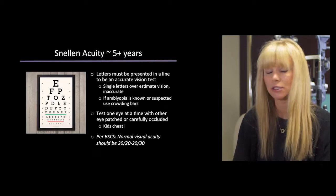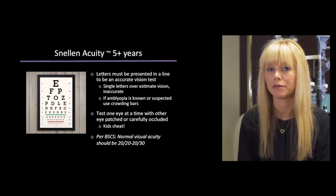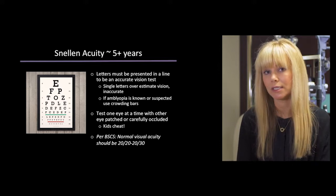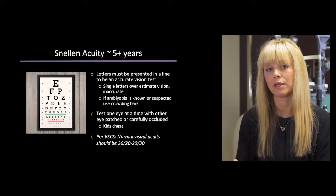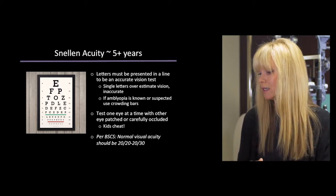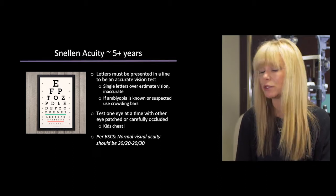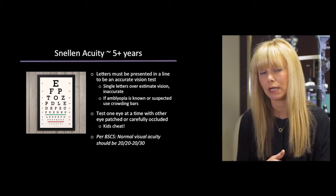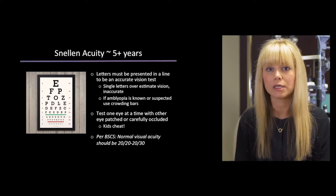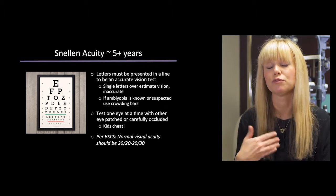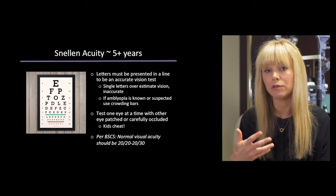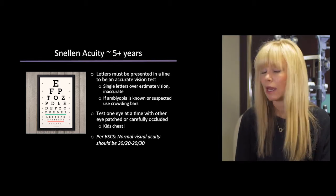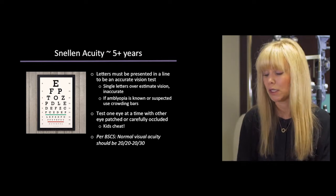Snellen eye chart testing can begin around five years of age depending on the child. We should present the child with letters in a line for most accurate vision testing, as single letters can overestimate the child's vision. We also want to test one eye at a time. Be vigilant — a child will look around the occluder not to deceive you, but just trying to perform well. We like to see vision in the range of 20/20 to 20/30 in this age range to be considered normal.